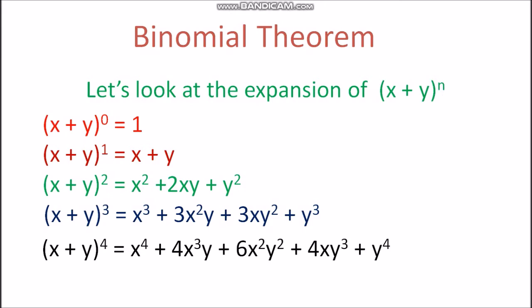The formula for (x + y)^n is already known. Let's start with (x + y)^0. We know that anything raised to the power 0 is equal to 1. So (x + y)^0 = 1.